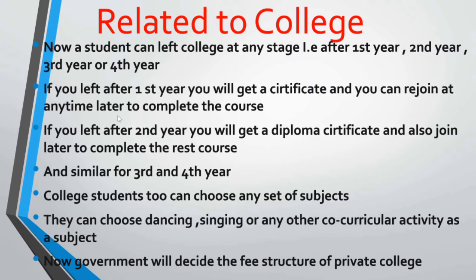Next is information related to college. Now a student can leave college at any stage — after the first year, second year, third year, or fourth year. If you leave after the first year, you will get a certificate and can rejoin anytime later. If you leave after the second year, you will get a diploma certificate and can rejoin to complete the course if you wish. Similar provisions apply for third and fourth year students.